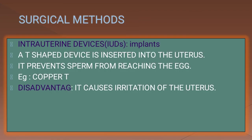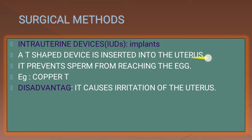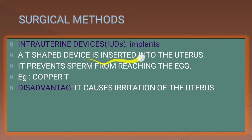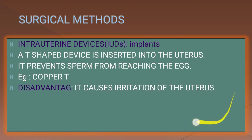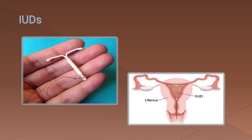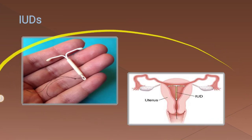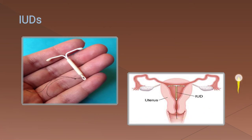Surgical methods include intrauterine devices, IUDs or implants. A T-shaped device is inserted into the uterus to prevent sperms from reaching the egg. An example is the copper T. A disadvantage is that it can cause irritation of the uterus. This image shows the copper T and how it is inserted into the uterus.